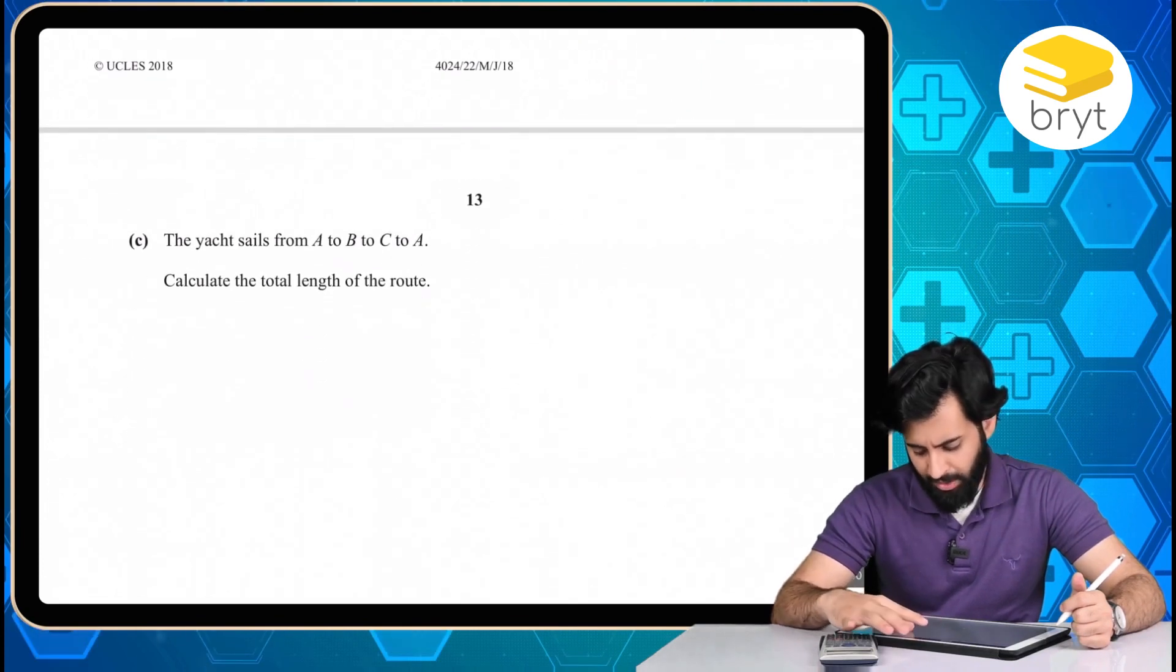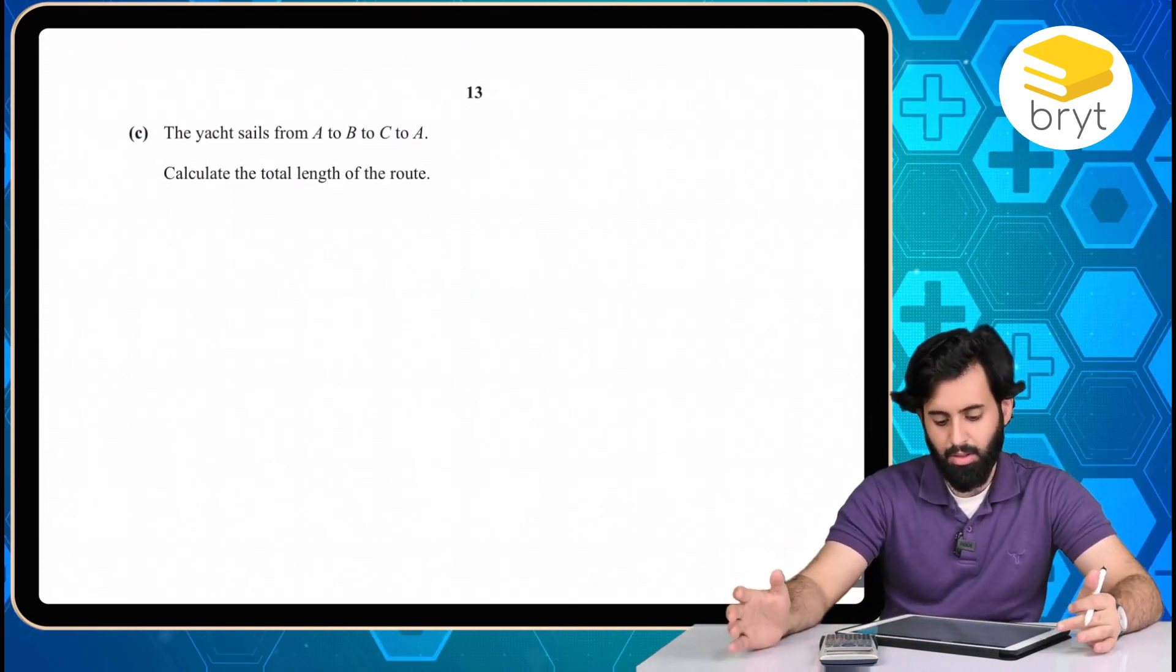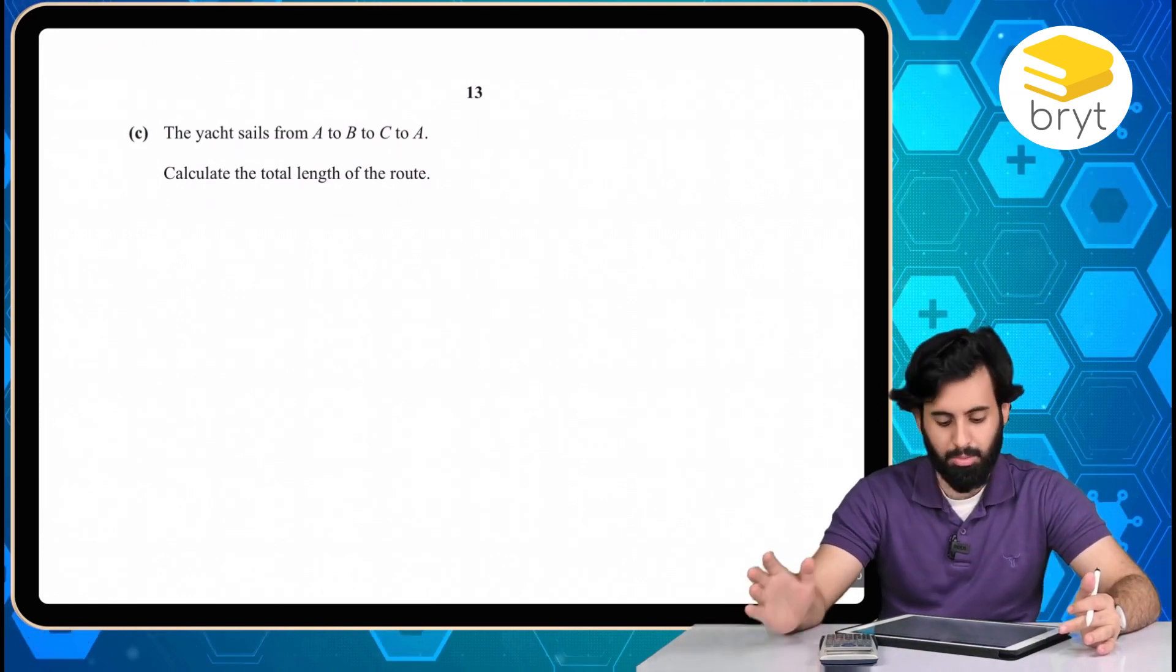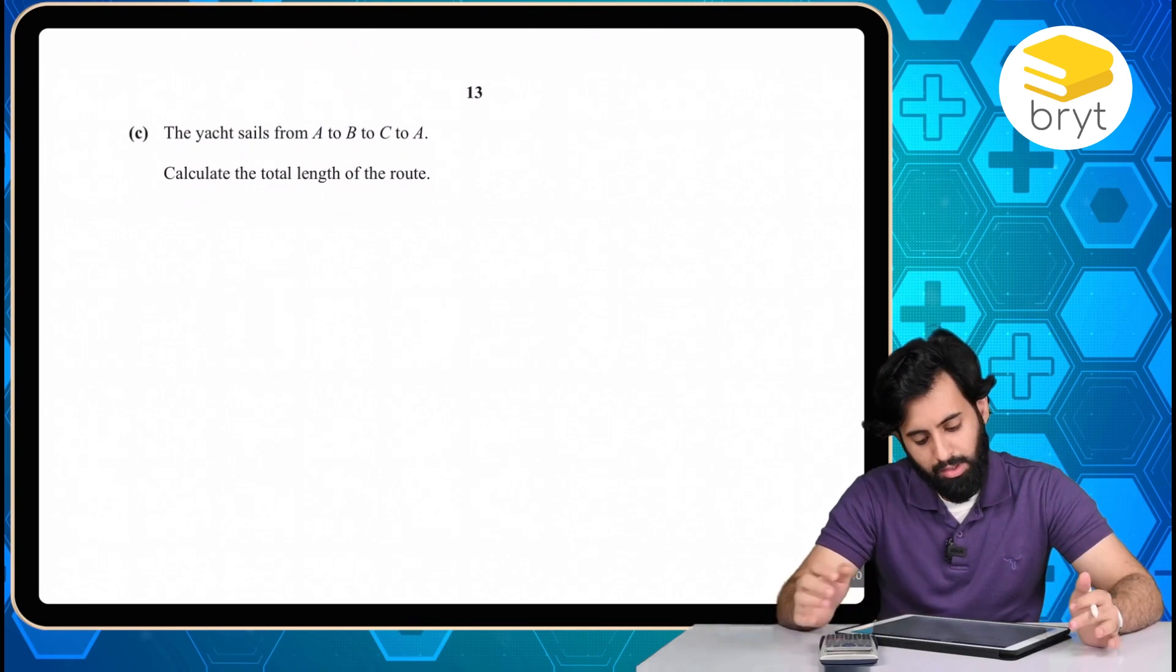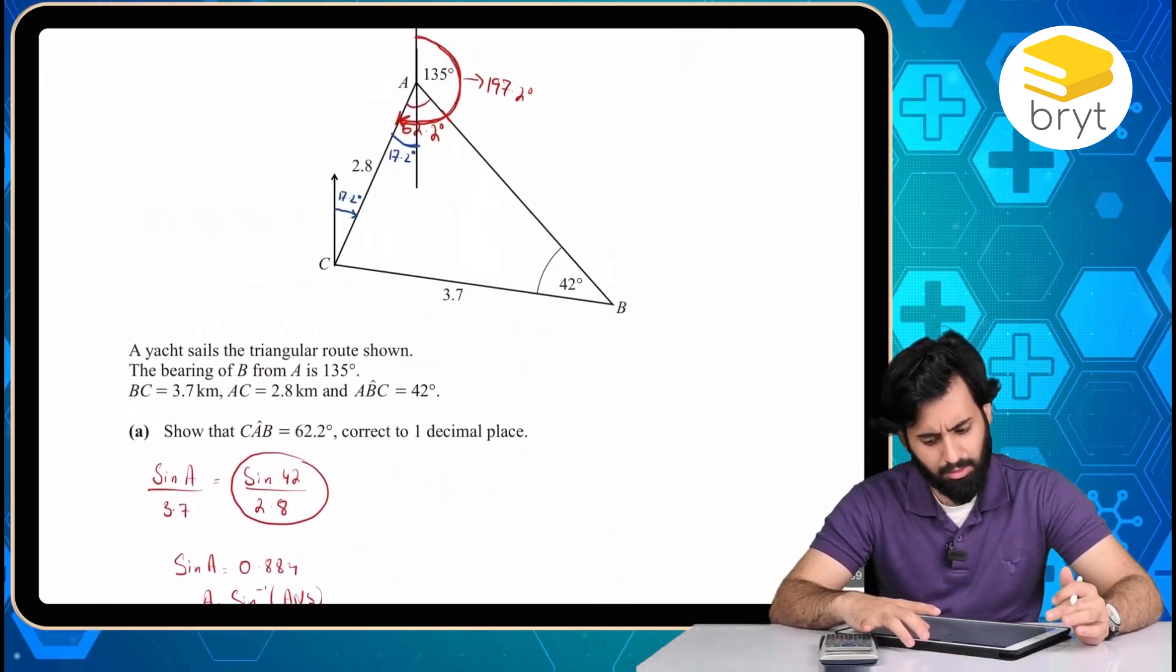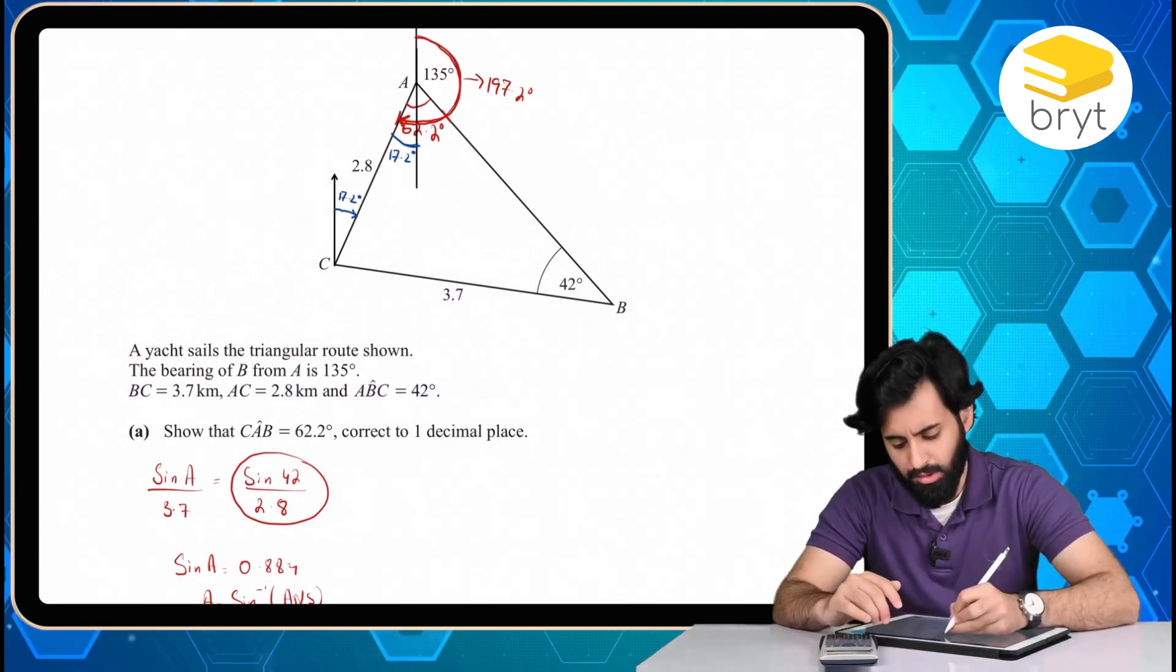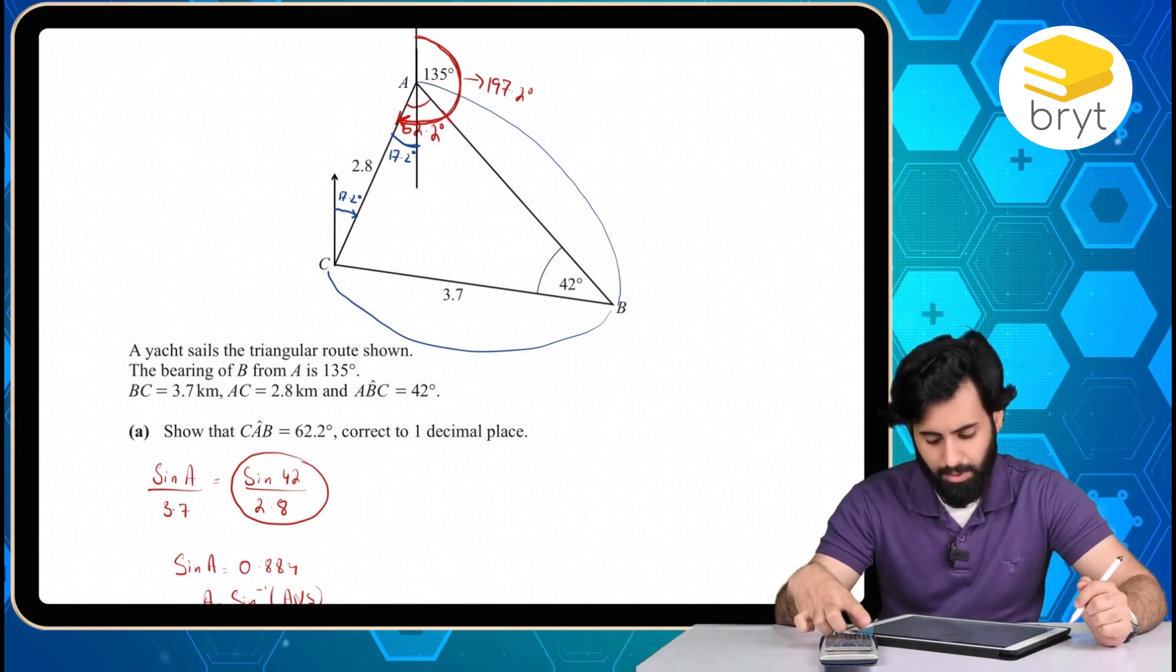And then we move to part C, which says the yacht sails from A to B to C to A. So basically A to B and then B to C and then C to A. Calculate the total length of the route. So that's just a fancy way of asking the perimeter. A to B. So that means from here to here and then from here to here and then from here to here.